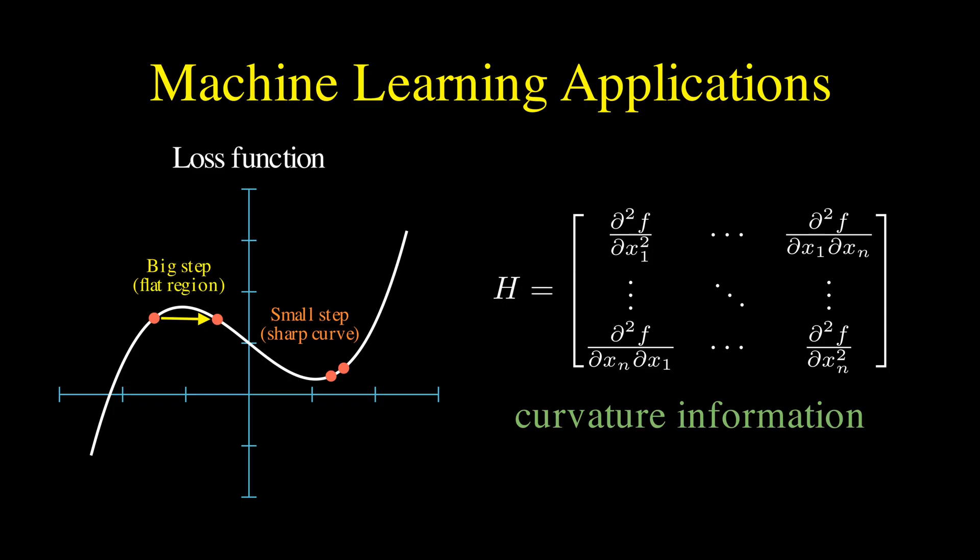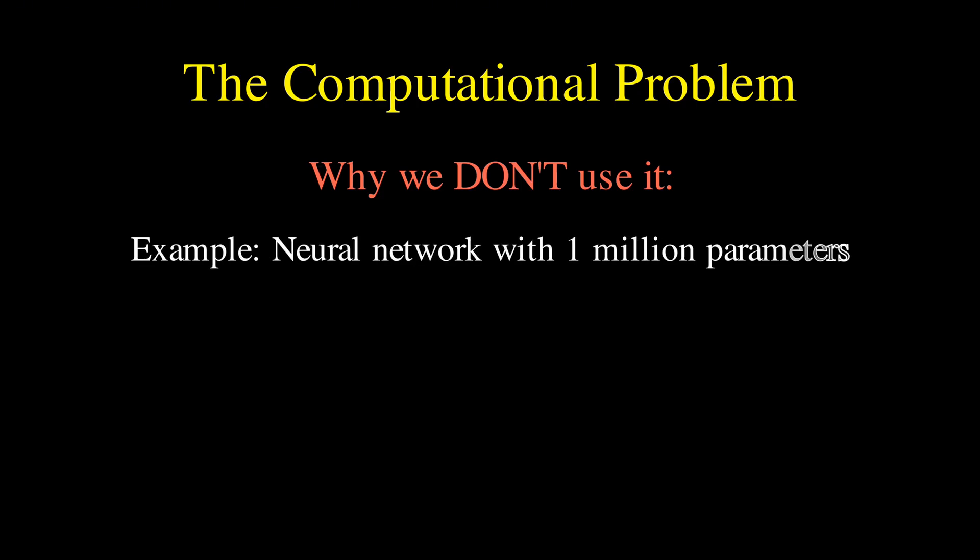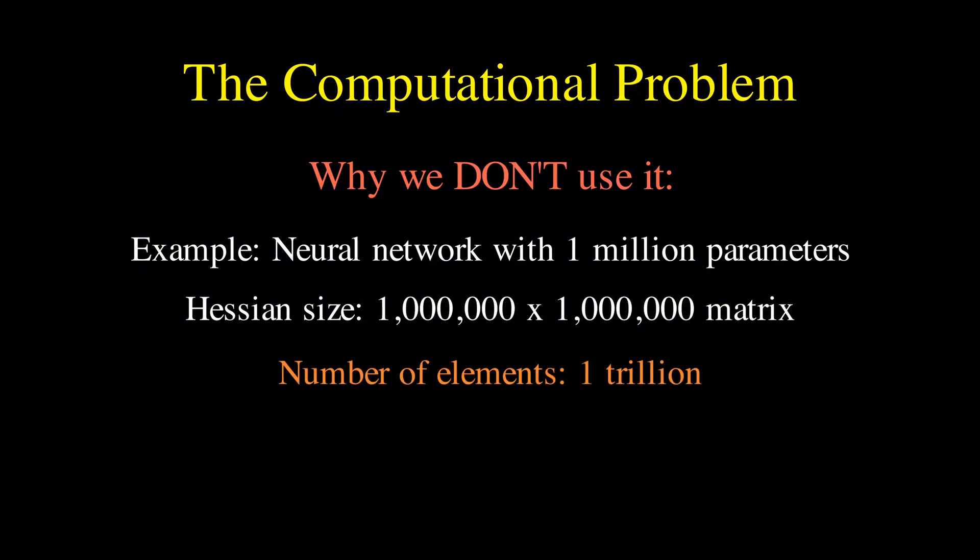But here is the problem. Here is why we almost never actually use the Hessian in modern deep learning. And it comes down to a computational nightmare. For a function with n variables, the Hessian is an n by n matrix. So, if you have a network with 1 million parameters, the Hessian would be a 1 million by 1 million matrix.